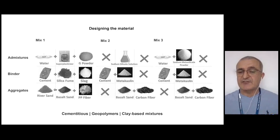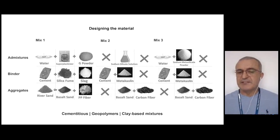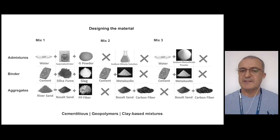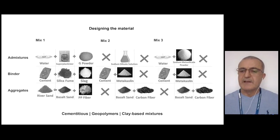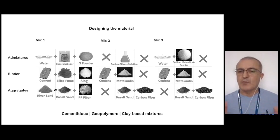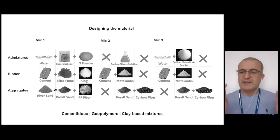We need to develop extrudable mixtures. We have focused on two types of materials: cementitious materials, which are mixtures with Portland-based cement as the main binder; and geopolymers, which use natural or recycled materials to produce the binder. We are also looking at clay-based mixtures. The challenge is to develop a material that flows well while being extruded, but after extrusion holds its shape so it does not deform beyond a certain point — there is a time window in which this must happen.